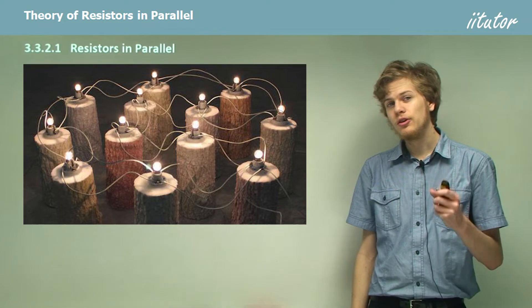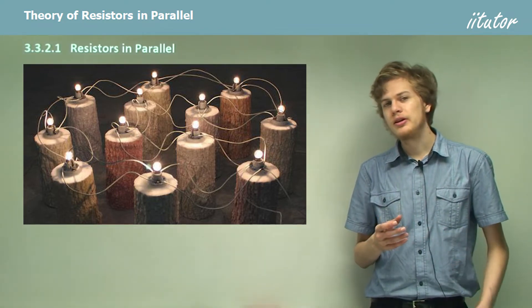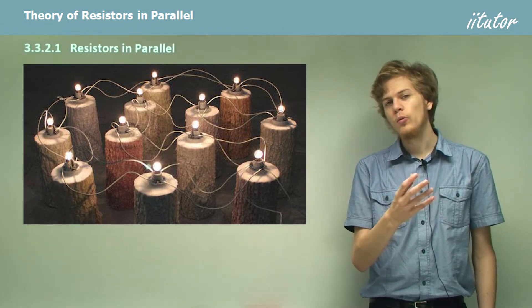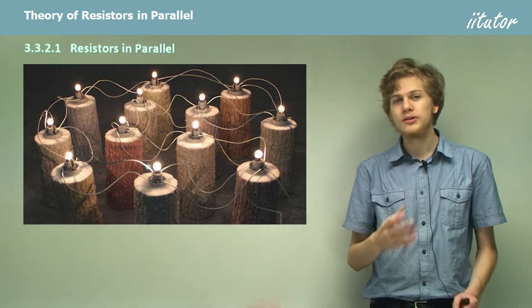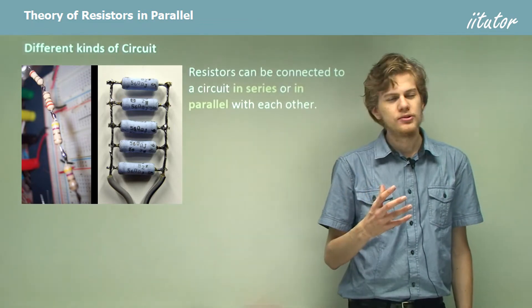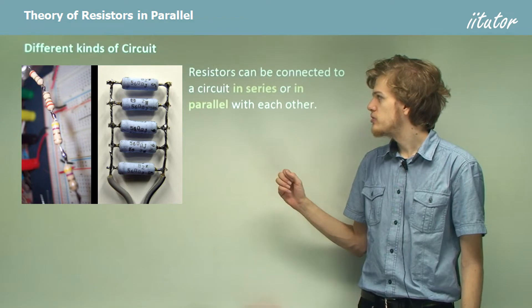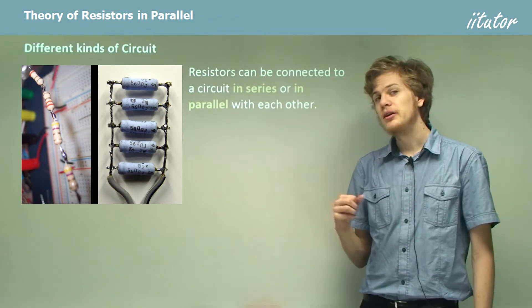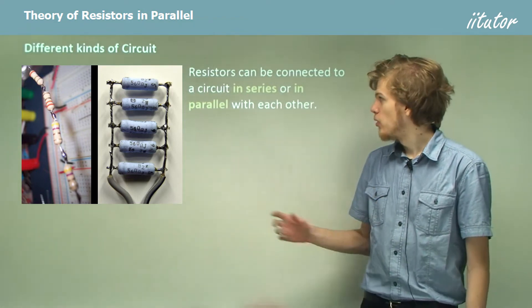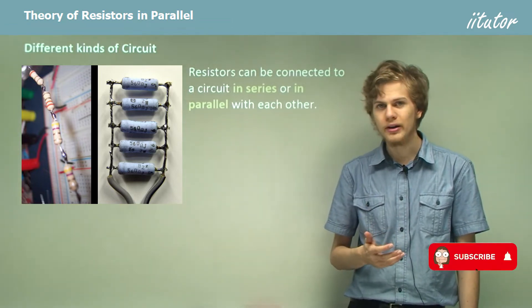We're going to be learning about resistors in parallel, and later on we'll be combining that with what we know about resistors in series. Resistors can be connected to a circuit in two different ways: they can be connected in series with one another, like the resistors on the left, or they can be connected in parallel with each other, like the resistors on the right.